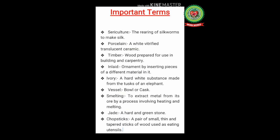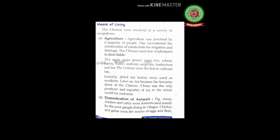Now have a look at the important terms related to today's topics. Number one: sericulture — the rearing of silkworms to make silk. Number two: porcelain — a white vitrified translucent ceramic. Number three: timber — wood prepared for use in building and carpentry. Number four: inlay — to ornament by inserting pieces of a different material. Number five: ivory — a hard white substance made from the tusks of an elephant. Number six: vessel — a bowl or cask. Number seven: smelting — to extract metal from its ore by a process involving heating and melting. Number eight: jade — a hard and green stone. Number nine: chopsticks — a pair of small thin tapered sticks of wood used as eating utensils.